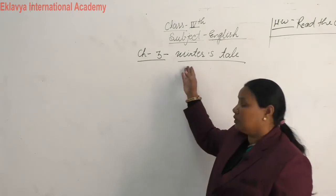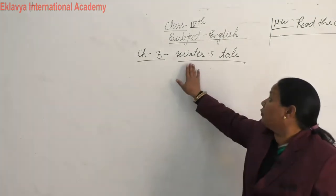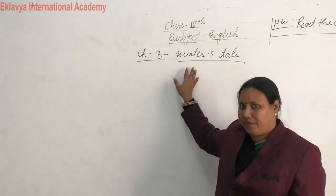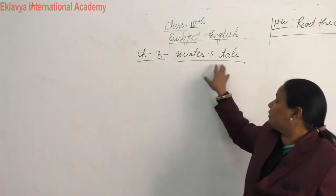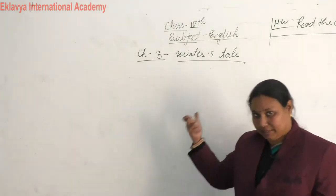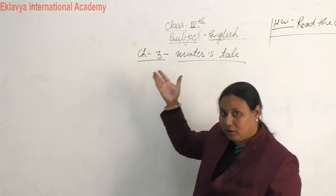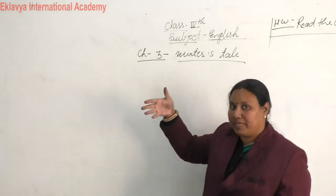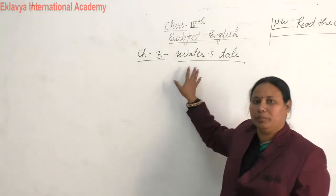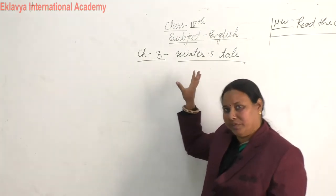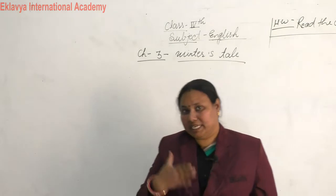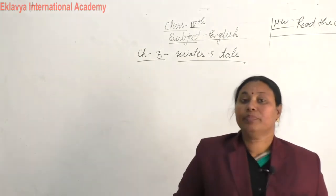You may be confused with this word — here, Winter is the name of a fish, a dolphin fish. So Winter's Tale means the story of Winter. The word belongs to a fish; ek machli ka naam hai — jis ka naam winter rakha gaya tha. To ismein hum us machli ki kahani padhenge.